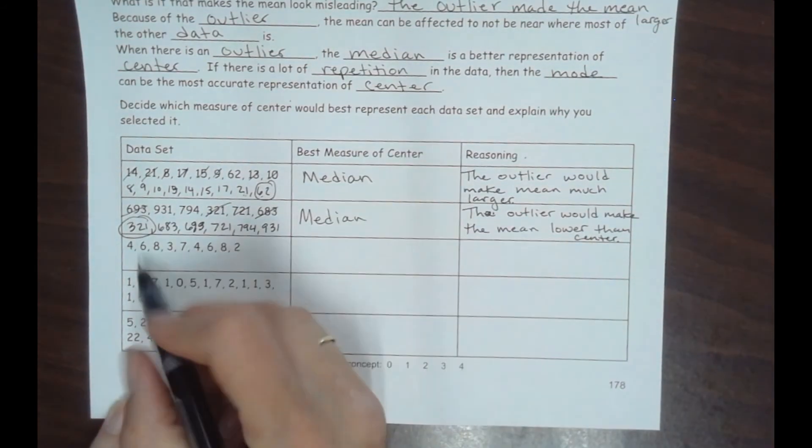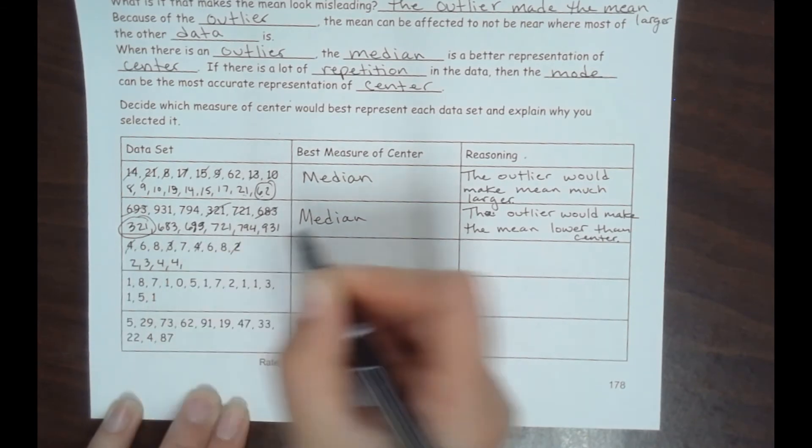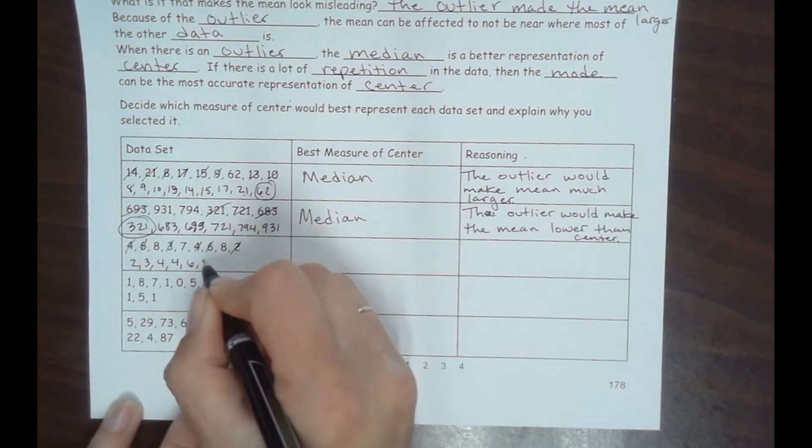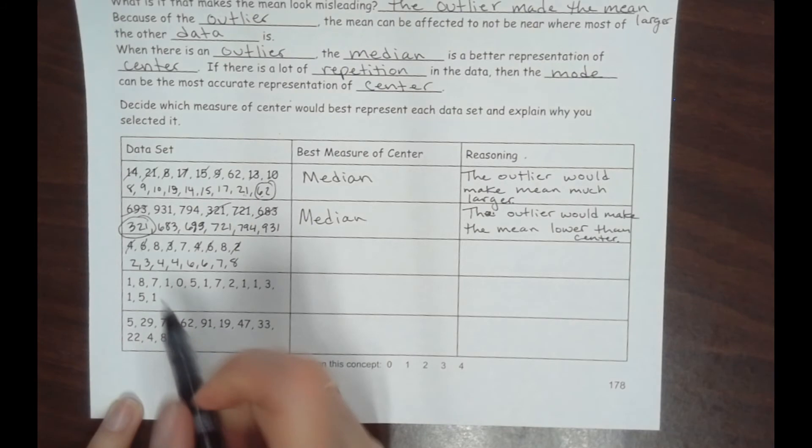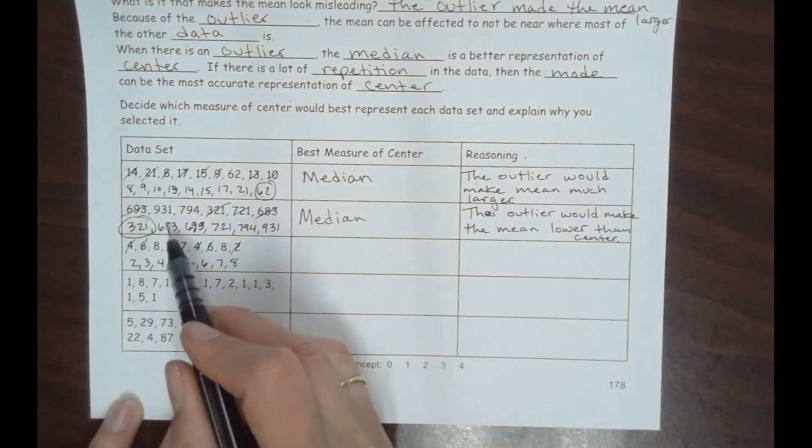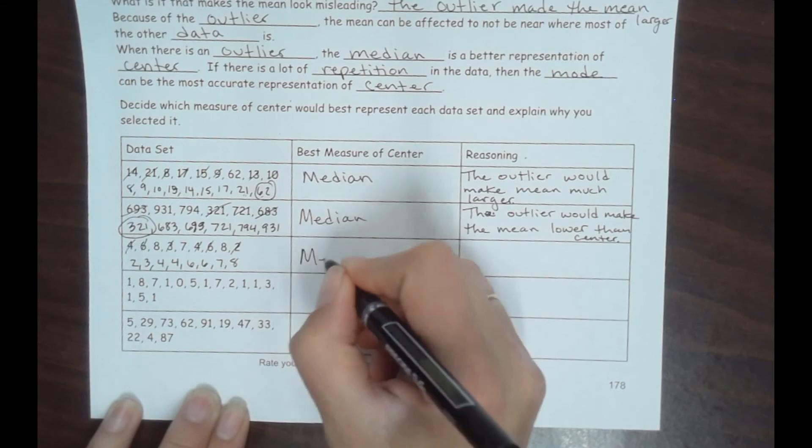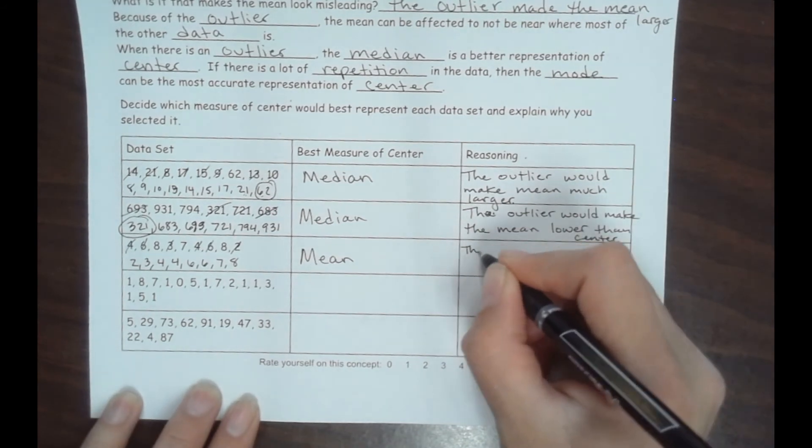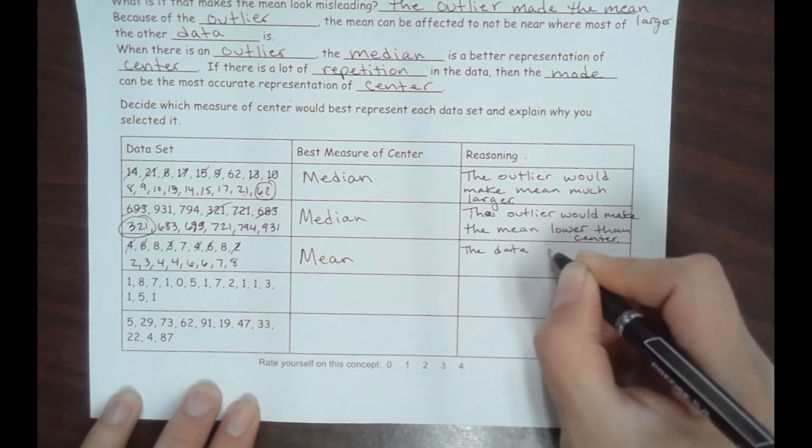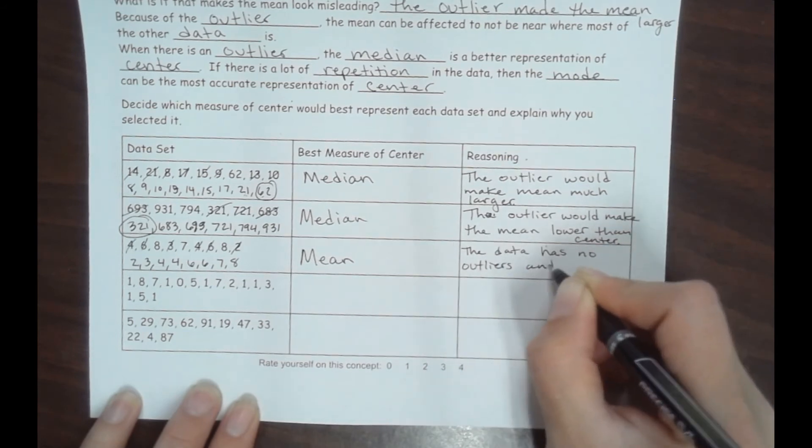Okay, let's put these in order from least to greatest. We have 2, 3, 4, 4, 6, 6, 7, and 8. Now there is some repetition here, but not a lot. The numbers aren't that spread out from each other in comparison. These are relatively close together. That tells me the mean is best. We always like the mean first; we just throw it out if there's an outlier. So the mean, because the data has no outliers and not a lot of repetition.